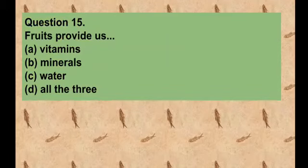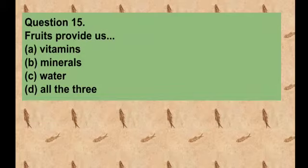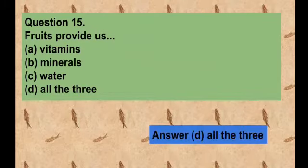Question number fifteen: Fruits provide us — option A vitamins, option B minerals, option C water, option D all three. The correct answer is all three, because we get vitamins, minerals, and water all from fruits.